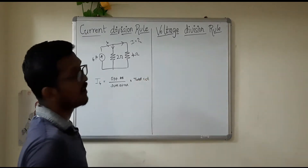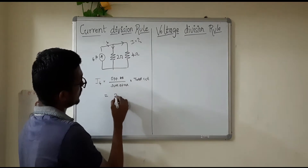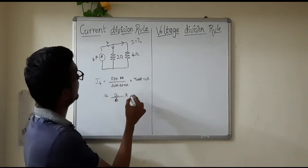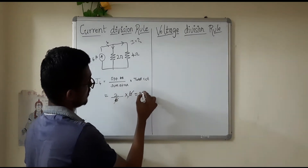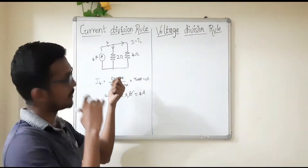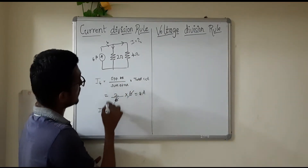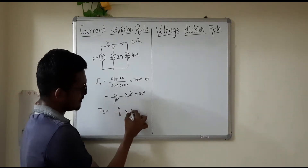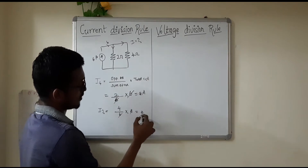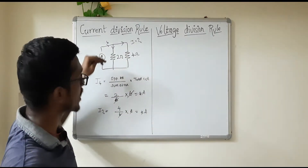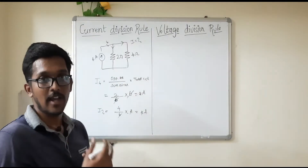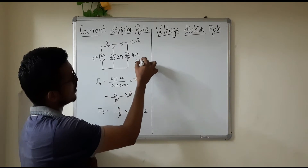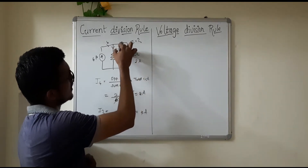The current through the 2 ohm resistance — using the opposite resistance of 4, divided by the sum 6, into total current 6. If you cancel, 4A current flows. That's why 4A current flows through the 2 ohm resistance. Current flows through the path of lower resistance.